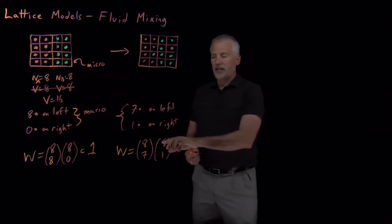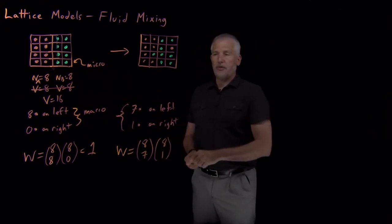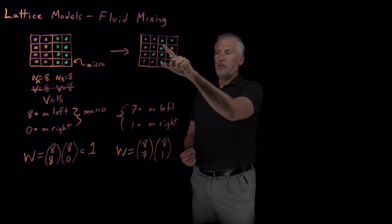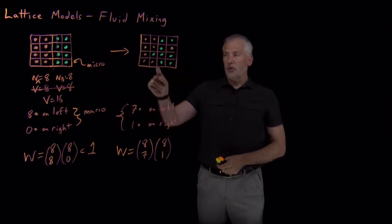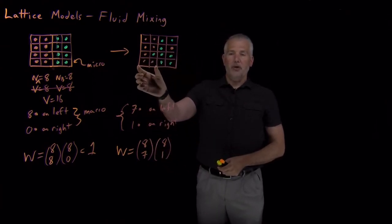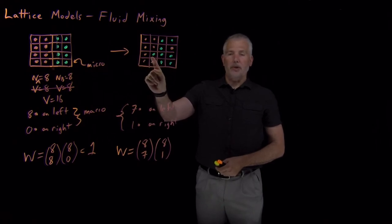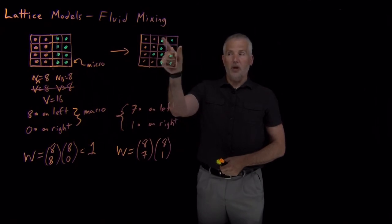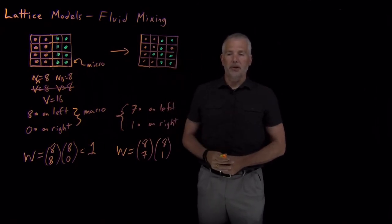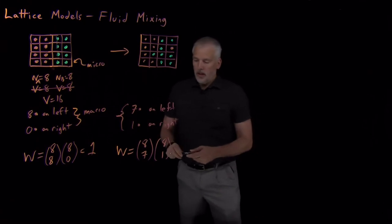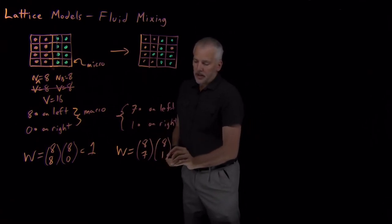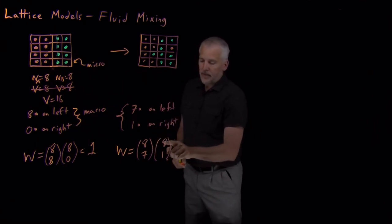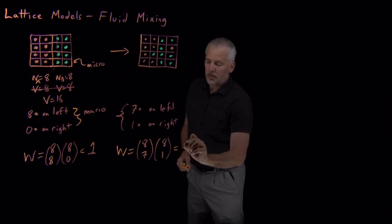You might ask why I don't also include a binomial coefficient here for describing how the green molecules behave, but once I've told you which seven spots are occupied by orange molecules on the left, there's no more choices to be made. All the green molecules are specified. Same thing on the right. If I've told you which one spot is occupied, all the other ones have to be occupied by green molecules. So eight choose seven is eight. Eight choose one is also eight, so the product there is 64.